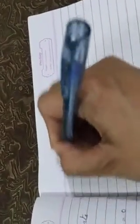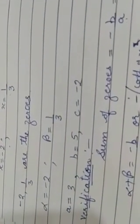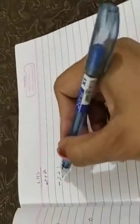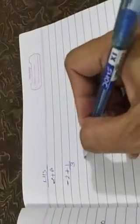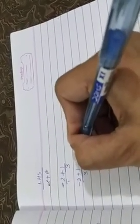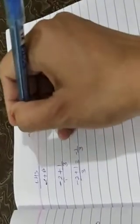Let us take the left-hand side first. Alpha + beta: alpha is -2 and beta is 1/3. On solving, (-2 + 1/3) = (-6 + 1)/3 = -5/3.